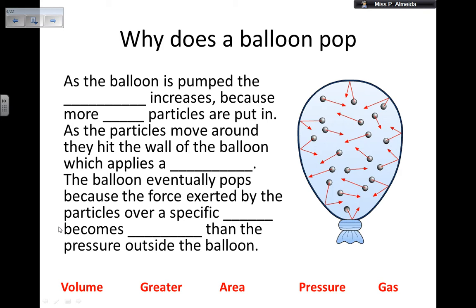As the balloon is pumped, the volume increases because more gas particles are put in. As the particles move around, they hit the wall of the balloon which applies a pressure. The balloon eventually pops because the force exerted by the particles over a specific area becomes greater than the pressure outside the balloon. So, this is an example and an exercise on why something pops or explodes. Pressure inside is greater than the pressure in the surroundings. It will try to come out of it so it explodes.